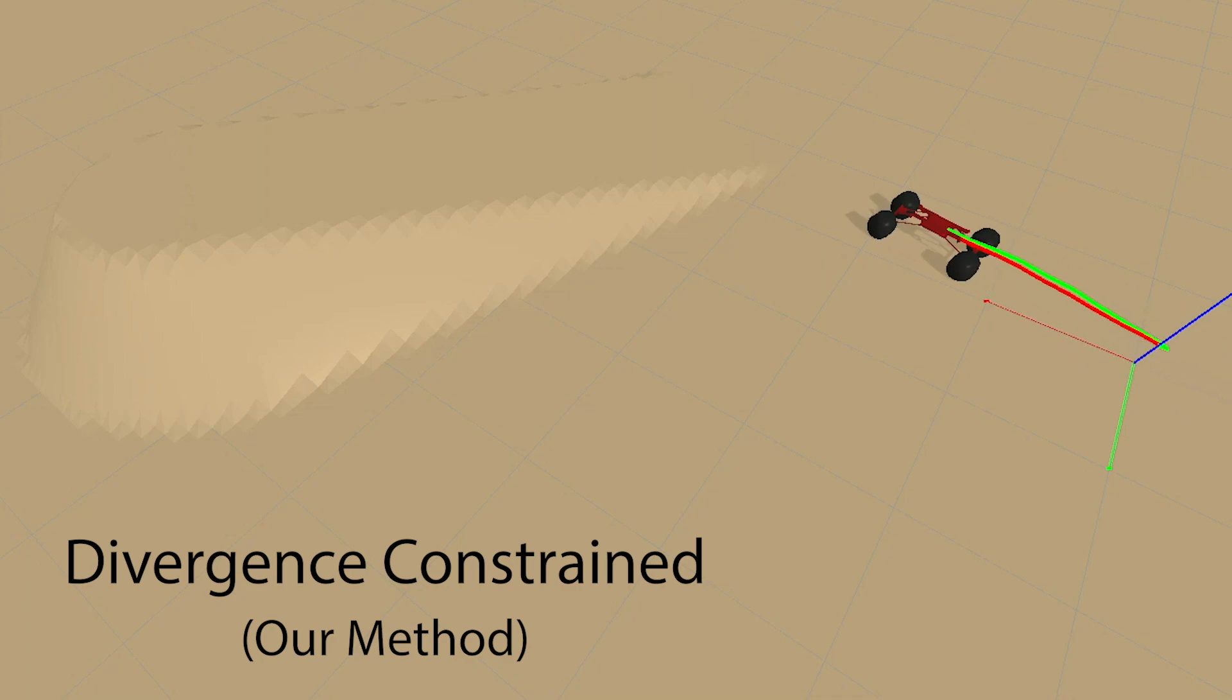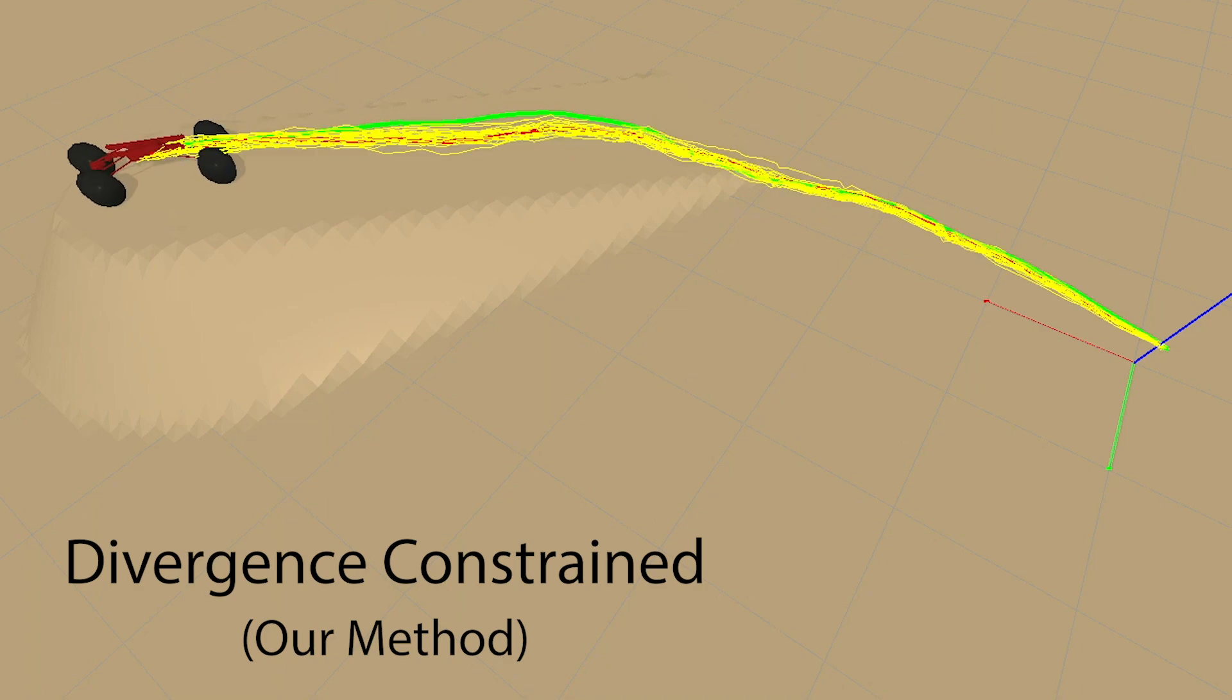Using our divergence constraint method, the robot was able to find non-myopic trajectories to the goal, which it was able to track effectively.